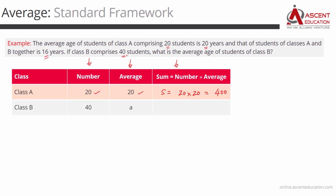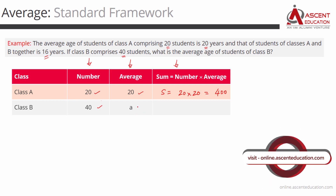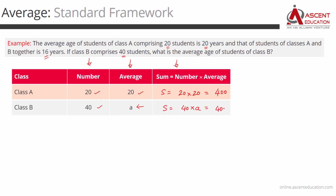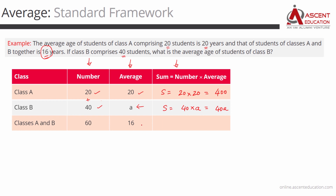For Class B: the number of students is 40. We do not know the average age, so we assign it a variable A, making the sum equal to 40A. For both classes together: 20 plus 40 gives 60 students. The average age of the two classes taken together is 16 years. So the sum of ages for both classes equals 60 into 16, which is 960.